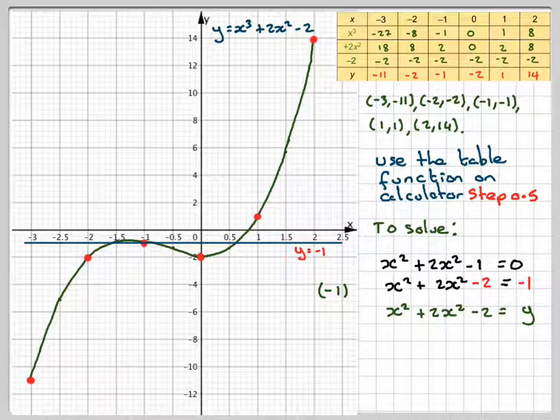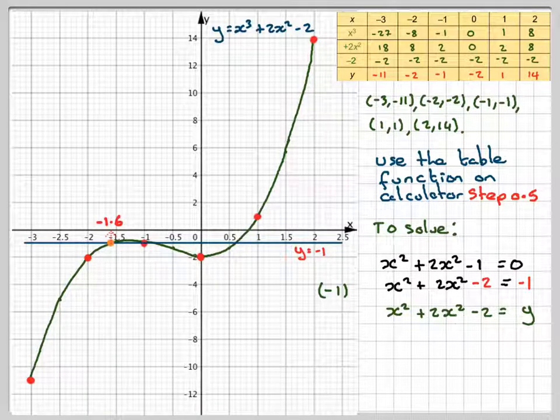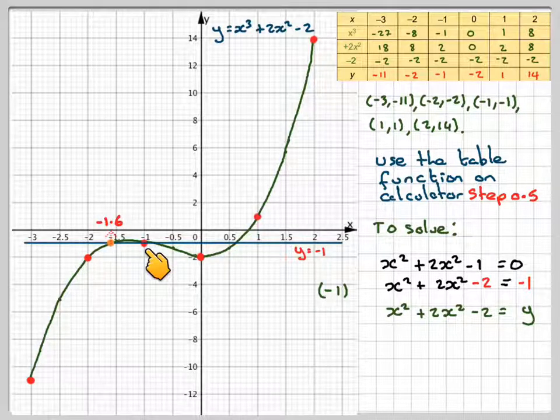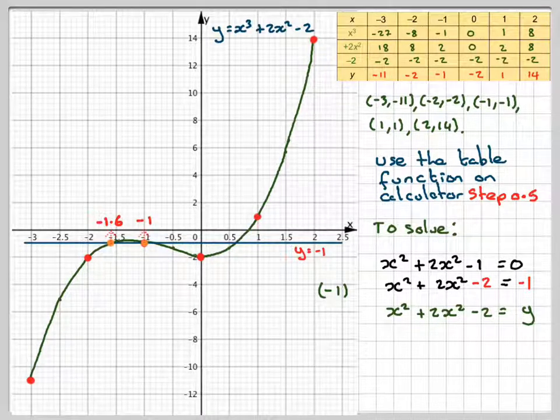So that's going to intersect there. So it's going to be about minus 1.6. Here at minus 1, I should get that one exactly minus 1.